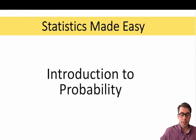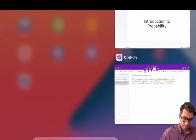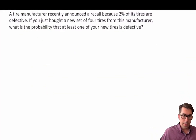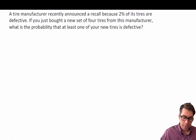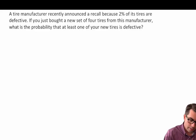In today's video we're going to continue our introduction to probability with a few worked examples, so let's go ahead and jump right into it. Here's our question: a tire manufacturer recently announced a recall because two percent of its tires are defective. If you just bought a new set of four tires from this manufacturer, what is the probability that at least one of the new tires is defective?